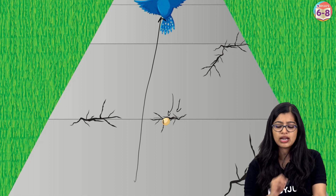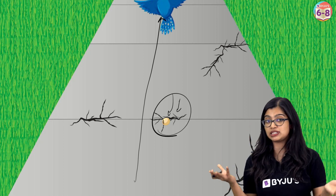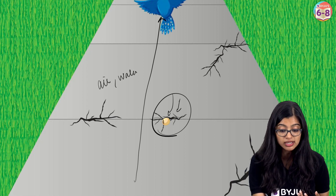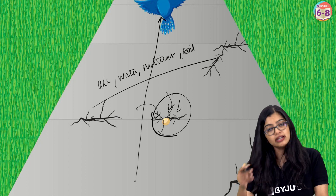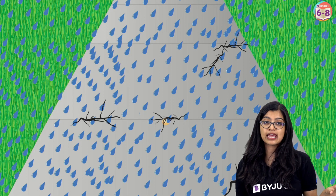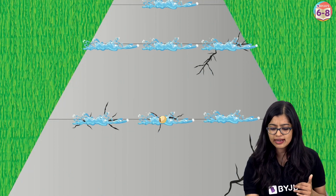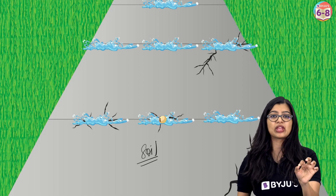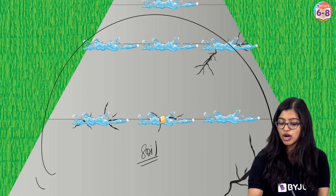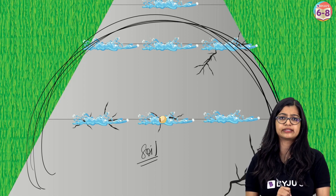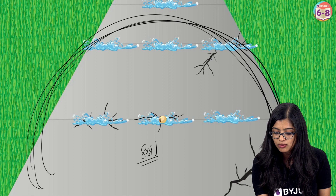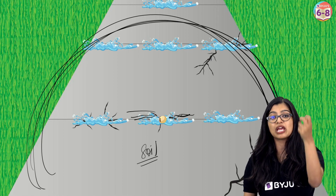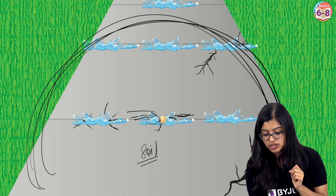The seed will remain inside the crack, but this is not very ideal for the seed to germinate and grow, because we know it requires air, water, nutrients, and soil. Air is provided by the surrounding environment. Let's assume it's constantly raining in this area, so the seed has the water it requires. But soil is still necessary. Now, if this were a big rock instead of a sidewalk, due to the constant exposure to winds and heavy rains, the crack will start to get bigger, and the rocks will slowly start to get broken down into soil.